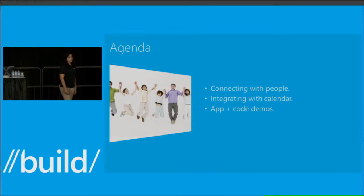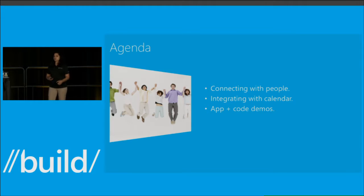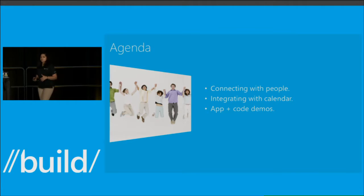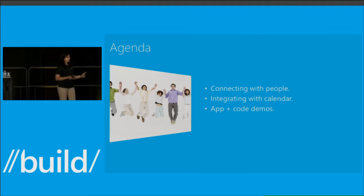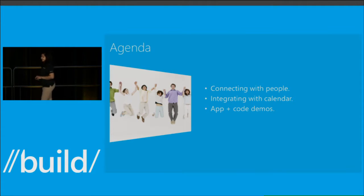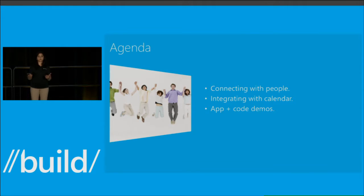Today we're going to talk about how you can connect your apps to people so your users can quickly look up information about their contacts and also interact with them using their preferred communication mechanism, whether emailing, messaging, posting on their wall, whatever that form may be. We'll also see how you can get events quickly into the user's calendar so that a user can have an aggregated view of everything going on. There will be exciting demos and code demos and APIs that make it possible for you to do this. If you have questions, I'd prefer if you could hold them toward the end of the session.